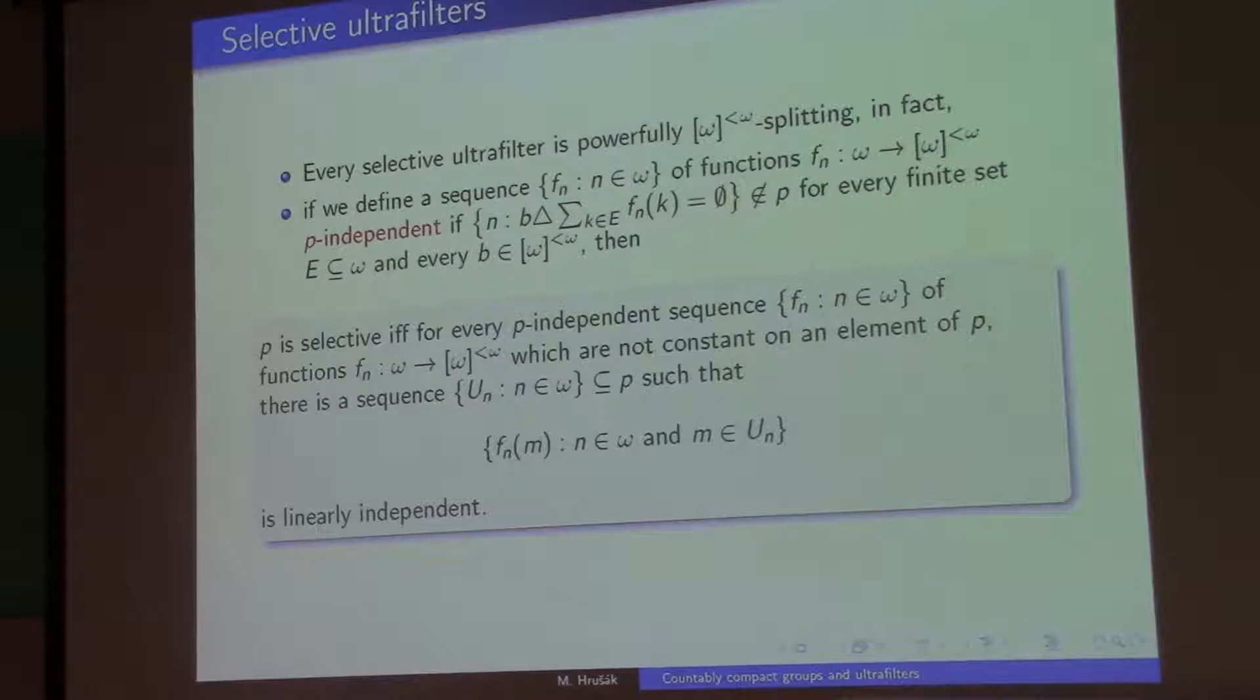So if I take a linearly independent sequence of functions, then I can find a sequence of elements of the ultrafilter such that each one of them is linearly independent, but also if I put them together, it's a linearly independent set. Of course, this is very helpful because then I can define my homeomorphisms on this big independent set in which way I want, in particular the way I want it to split all the sequences.